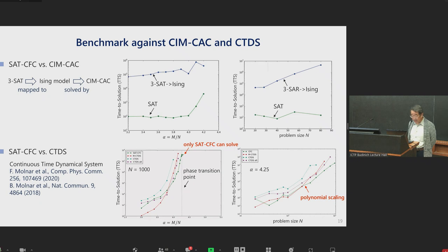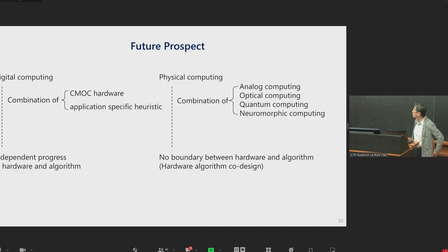Lower two panels shows the state-of-the-art SAT solver based on continuous variables, CTDS. As you can see on the left lower panel, CTDS cannot actually find the satisfying solution for alpha equal 4.26. This is a phase transition point and the most difficult point for any solver encounters. Only SAT CFC can find a satisfying solution for this phase transition point. Even at this phase transition point, the SAT CFC features polynomial scaling if the program size is smaller than 1,000. If larger, we don't know the answer.